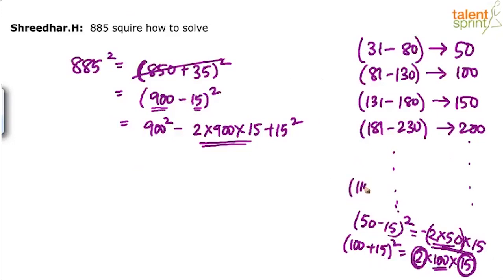Suppose it is 150. 150 plus 15. The understanding is this. 150 plus 15 whole square. This time what I will do is 15 into 3, 45. I will take 4500.